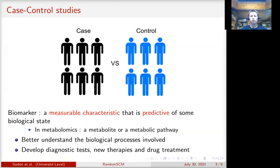Our goal is to find biomarkers, that is to say, measurable characteristics that are predictive of the phenotype of interest. Finding biomarkers will allow to better understand the biological processes involved. This could lead to the development of diagnostic tests, therapies, and drug treatments.